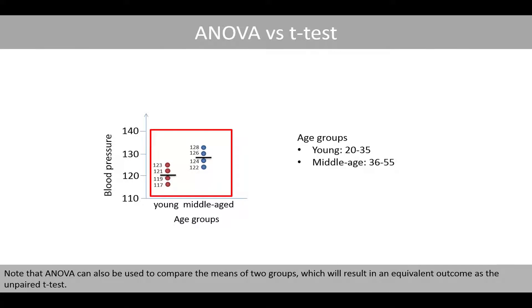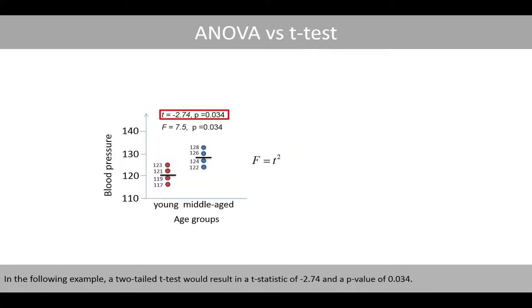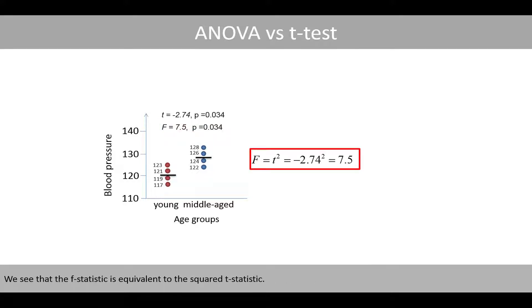Note that ANOVA can also be used to compare the means of two groups, which will result in an equivalent outcome as the unpaired t-test. Before we go into the details about ANOVA, let's first compare it to the unpaired t-test, so that we understand the difference between the two methods. The F-statistic computed by the ANOVA is in fact equal to the square of the t-statistic from the t-test. In the following example, a two-tailed t-test would result in a t-statistic of negative 2.74 and a p-value of 0.034, whereas an ANOVA would result in the same p-value and an F-statistic of 7.5. We see that the F-statistic is equivalent to the squared t-statistic.